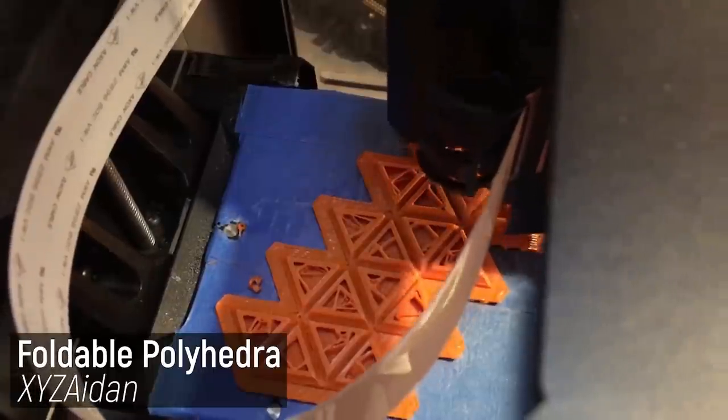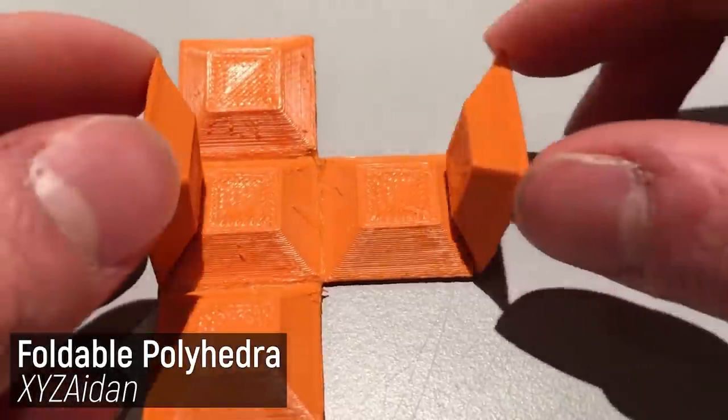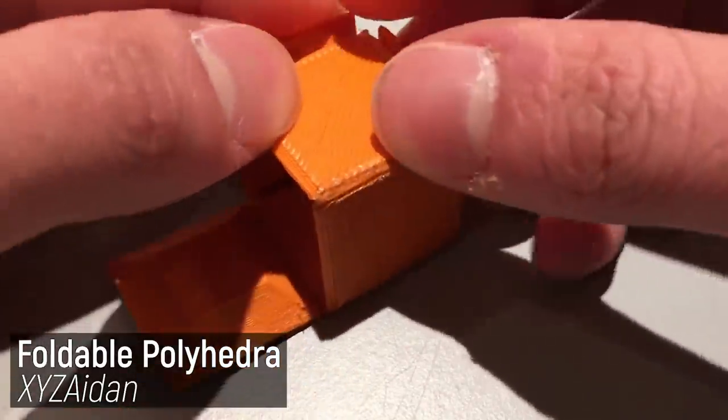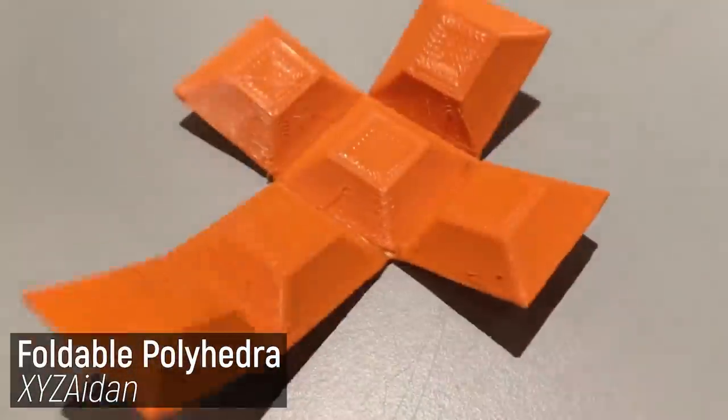But the issue when you 3D print this sort of thing is that PLA, for example, doesn't make a very durable live hinge. And if you want to use a more durable material like a polyamide or a semi-flex 3D printing filament, then the rest of your part is going to have those characteristics. That's unless you have a very fancy multi-material printer that could print the hinge in a semi-flex and the rest of the print in a more rigid material. Most of us don't have that, so we need to find other alternative methods.